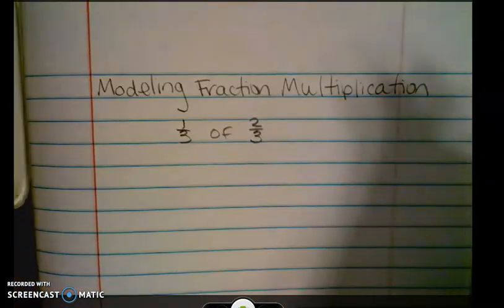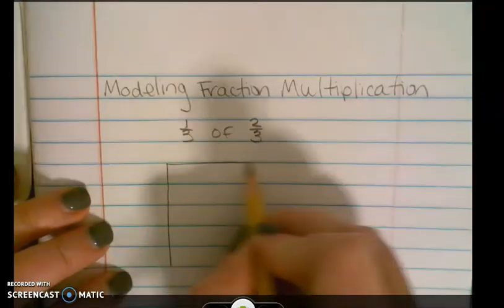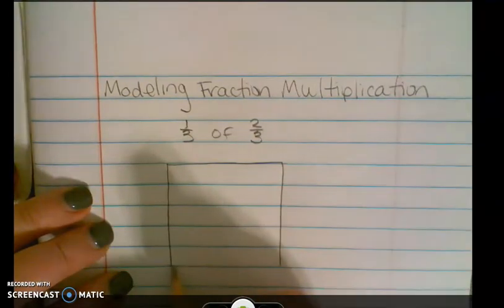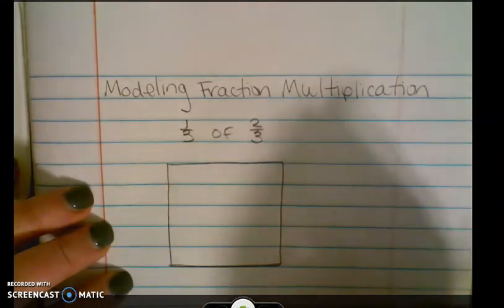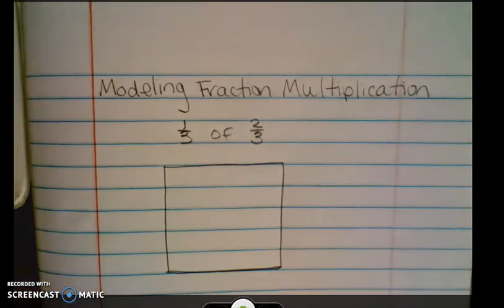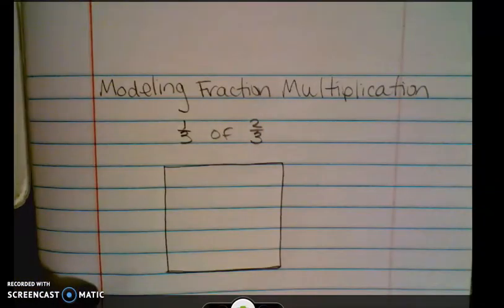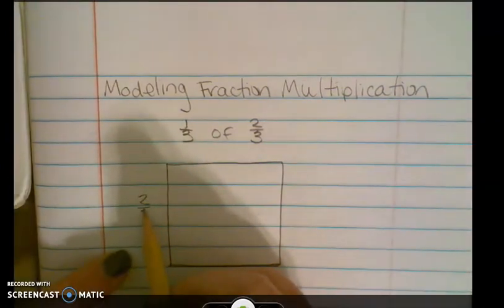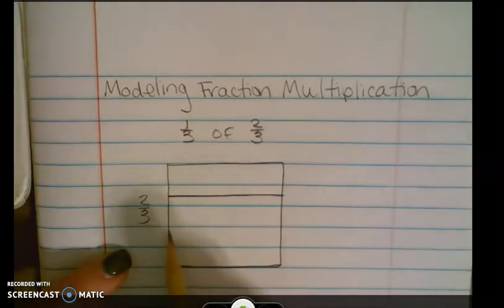So let's start with our brownie pan. Take a second, draw your brownie pan in your notebook, and we are going to start with our second fraction. We're going to make sure that goes on one side of our array and we're going to cut it going across into thirds.